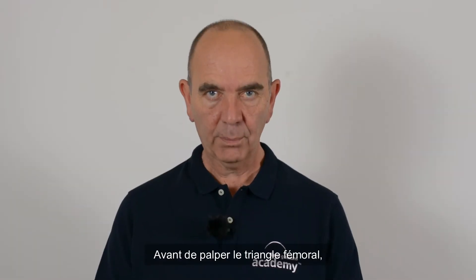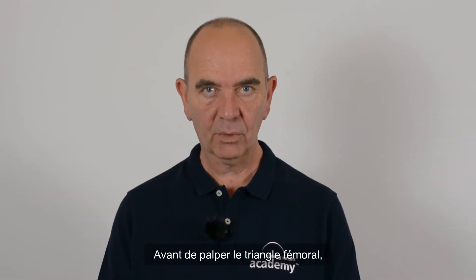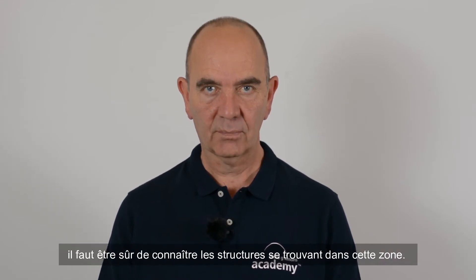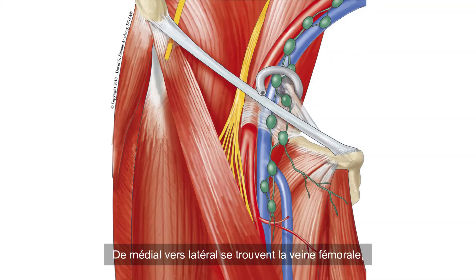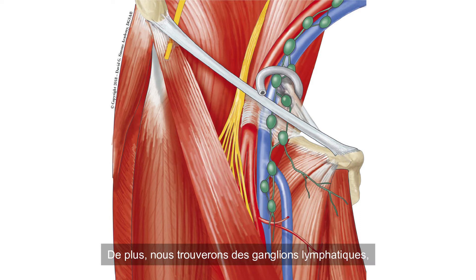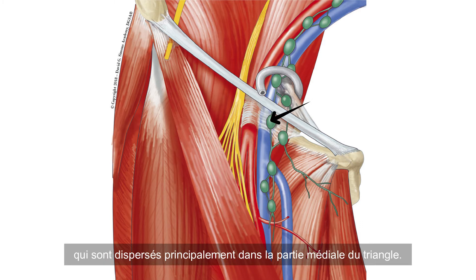Before we palpate in the femoral triangle we have to know the structures there. From medial to lateral are the femoral vein, artery, and nerve. In addition we will find lymph nodes, which are scattered mainly at the medial part of the triangle.